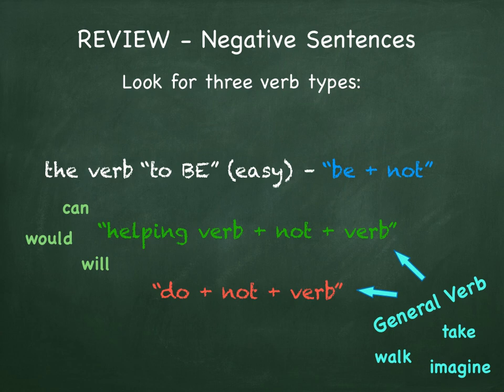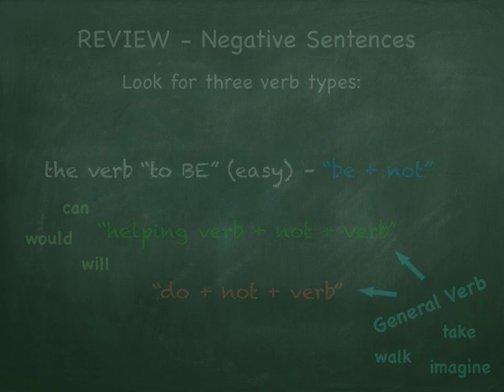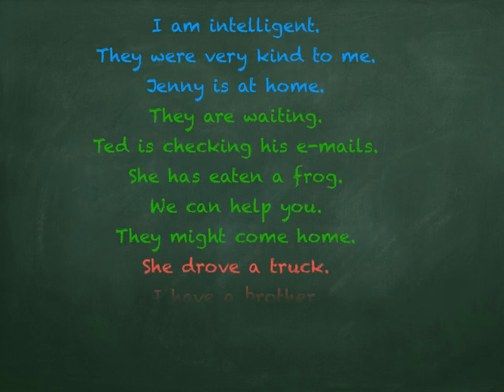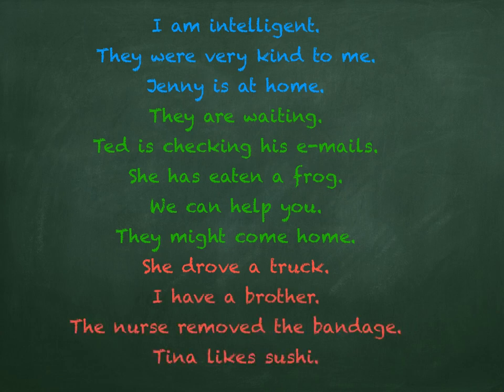Let's look at some examples to see how these work in reality. The blue sentences have the verb to be, the green sentences have helping verbs, and the red sentences have simple past and simple present general verbs only.